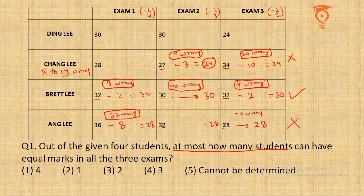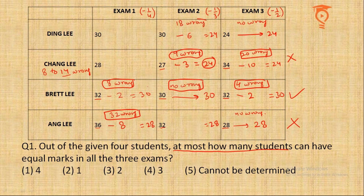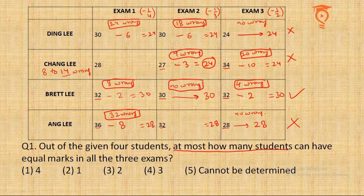For Dingley the difference is also large. Suppose no wrong answers in Exam 3 — final score is 24. To match that in Exam 1, he needs to subtract 6 marks, requiring 24 wrong questions. That leaves only 6 questions remaining — not possible. Three out of four people are disqualified. Only Bretley can achieve equal marks in all three exams, so the answer to Question 1 is 1.